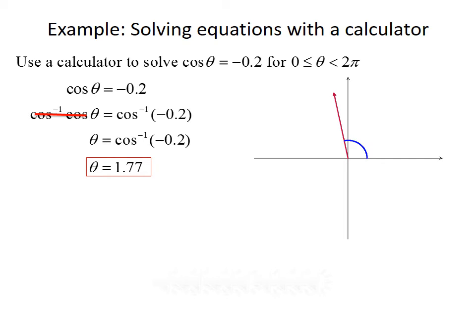The calculator only gives us one value, but there may be others. Theta equals 1.77 is just past π/2, so it lives in the second quadrant. Cosine is also negative in the third quadrant, so there's another angle there as well. We find that angle by subtracting 1.77 from 2π. So the second angle is 2π minus 1.77, which gives us approximately 4.51. The two solutions on the interval from 0 to 2π are 1.77 and 4.51.